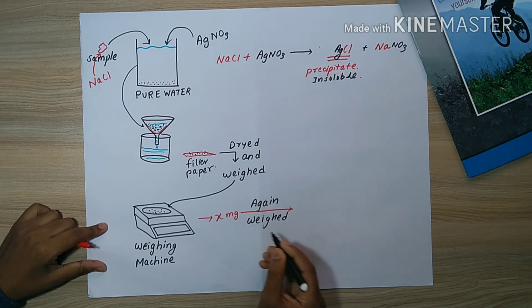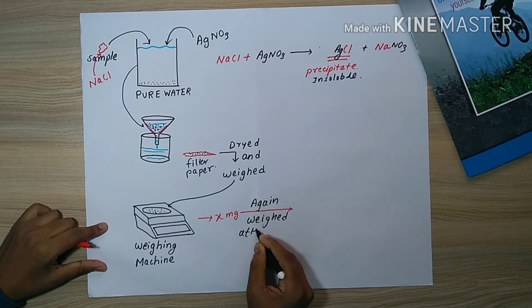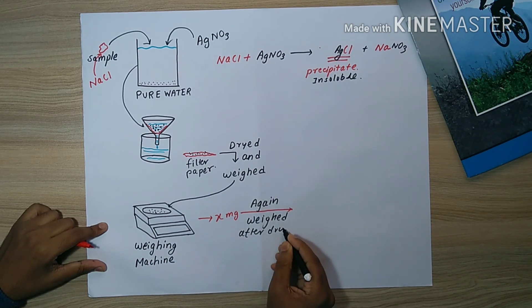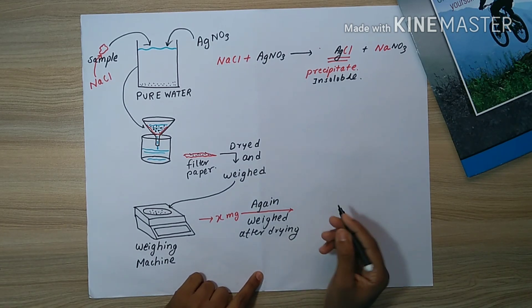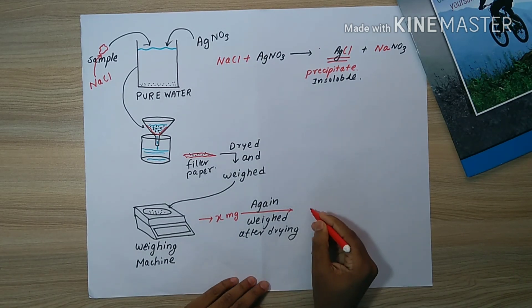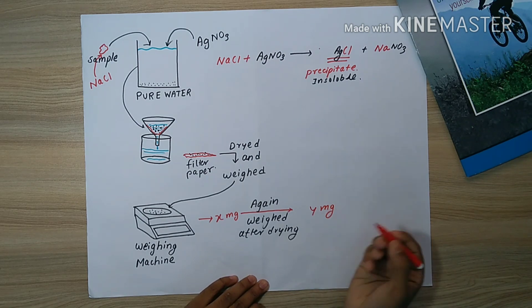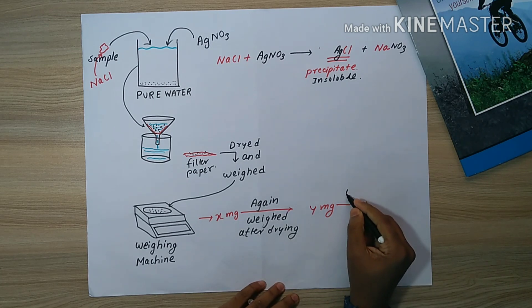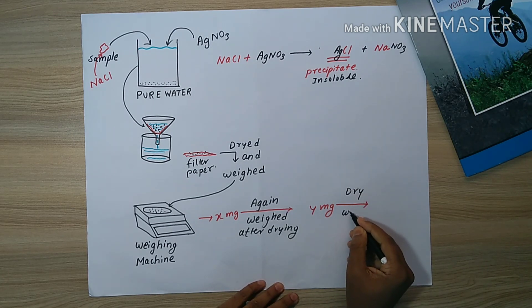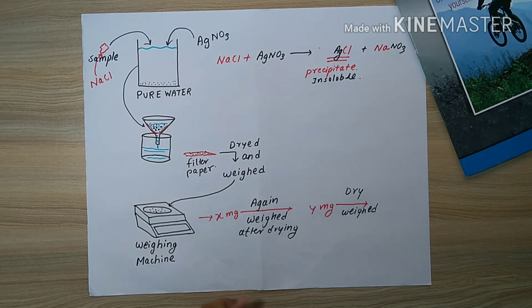After the drying and weighing of the precipitate, the weight changed to y milligrams - a reduction of weight has occurred from x to y. Then we again dry and again weigh it, repeating the process of drying and weighing.